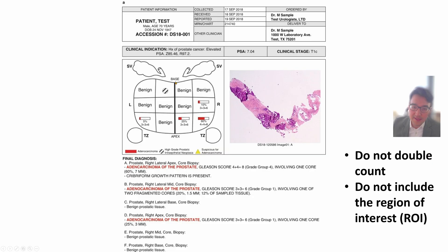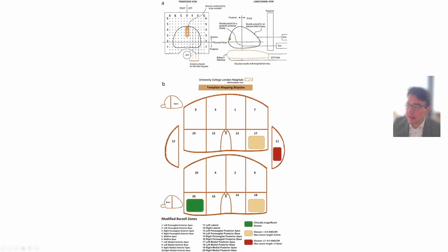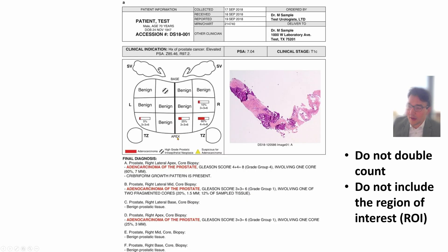This is a little confusing because you'd think the base should be at the bottom, but actually the prostate is like an upside-down pyramid or upside-down pear. So the base is at the top and it goes down to the apex. L is left, R is right, SV is seminal vesicle — the two little organs that hang off the top — and TZ is the transitional zone.